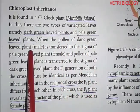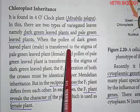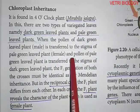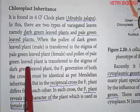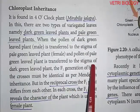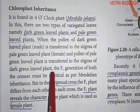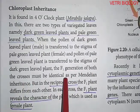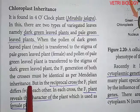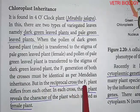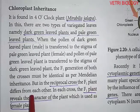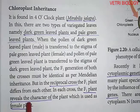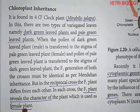Pollen of the dark green leaved plant is transferred to the stigma of the pale green leaved plant as female, and pollen of the pale green leaved plant is transferred to the stigma of the dark green leaved plant. As per Mendelian inheritance, the F1 generation of both crosses must be identical. But in the reciprocal cross, the F1 plants differ from each other.